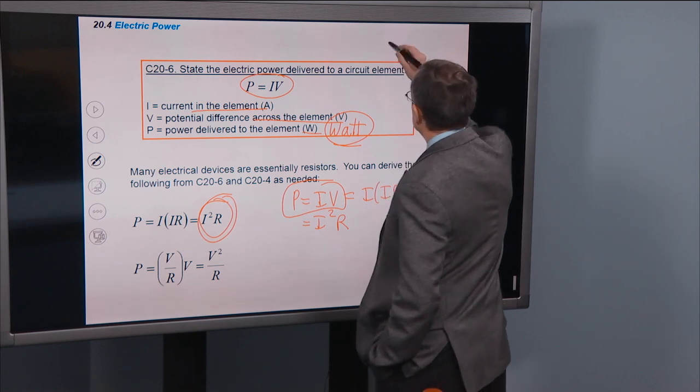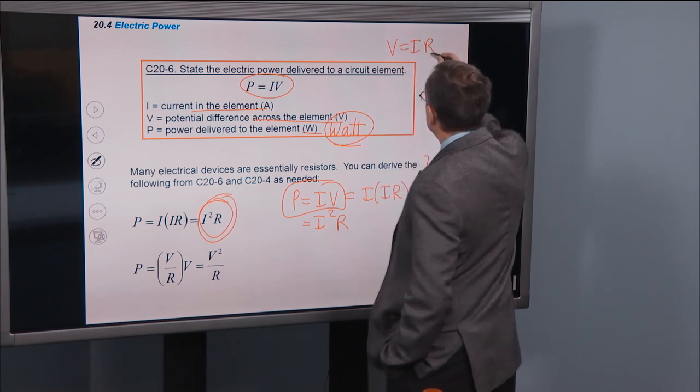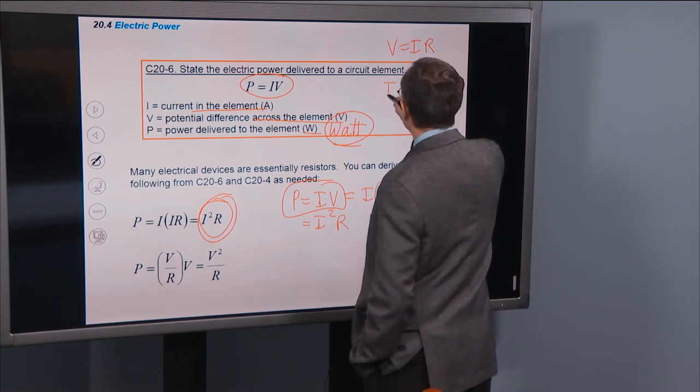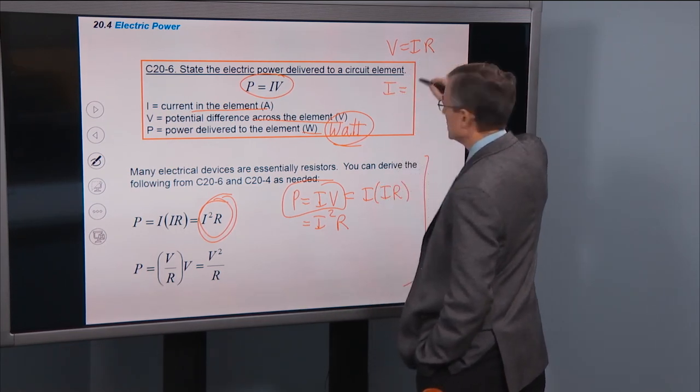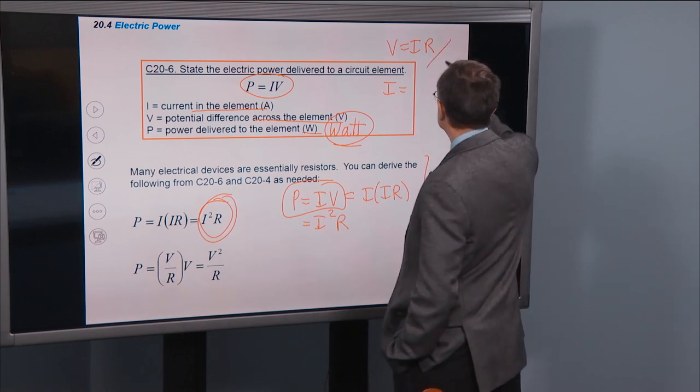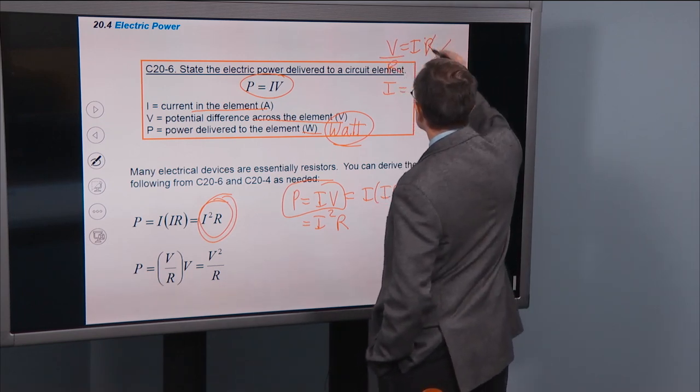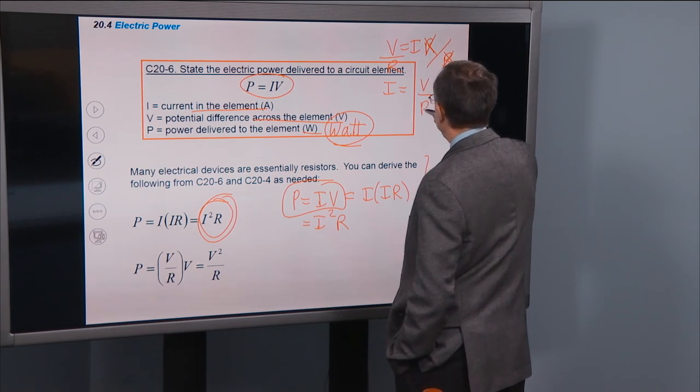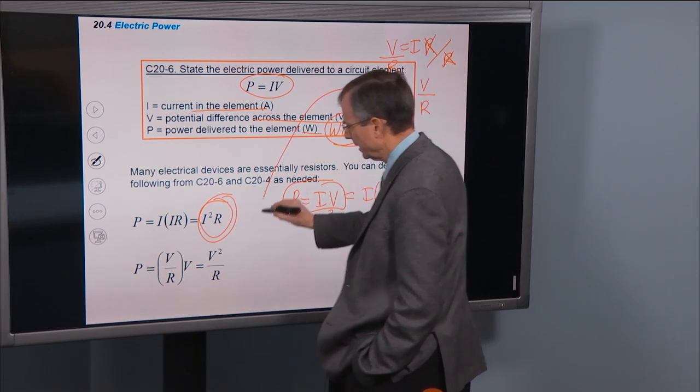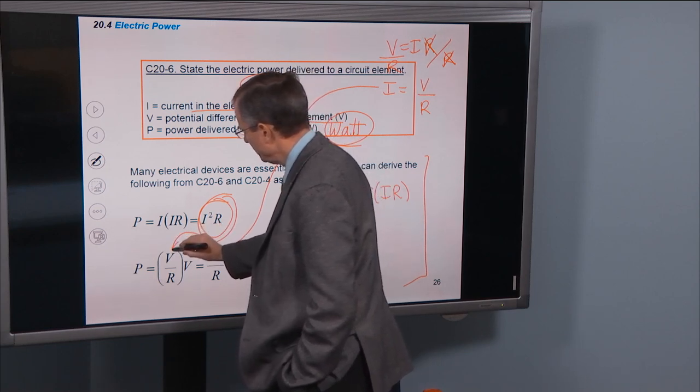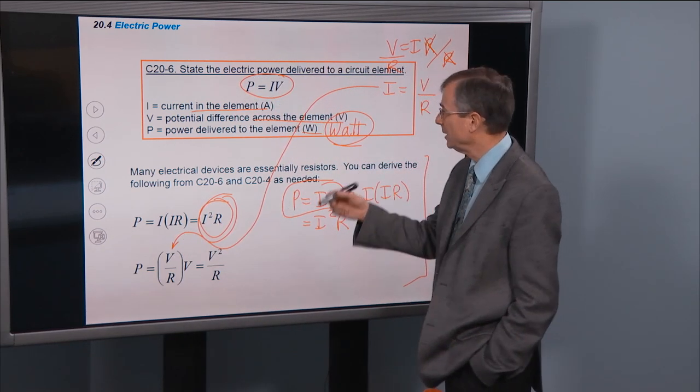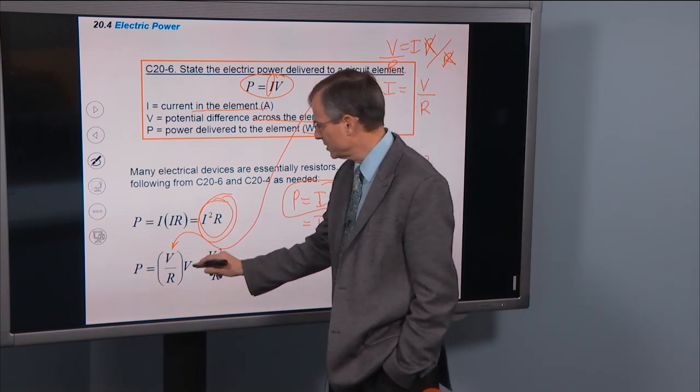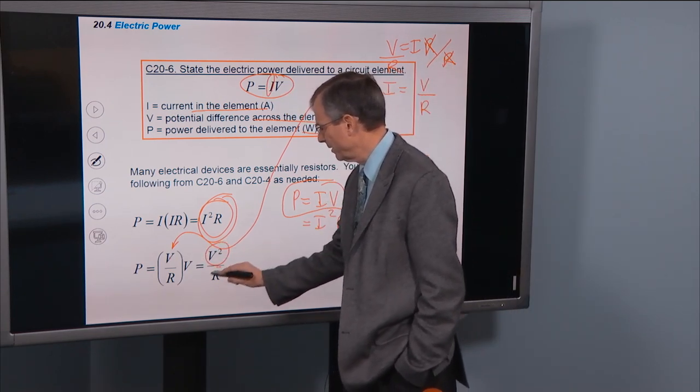Well, V equals IR, if I want to get rid of the current, then let me solve for it. I'm going to divide both sides by R, the R's cancel, then we get I is V over R. So if I put this I in place of the I in P equals IV, then we'll get V squared in the numerator divided by R.